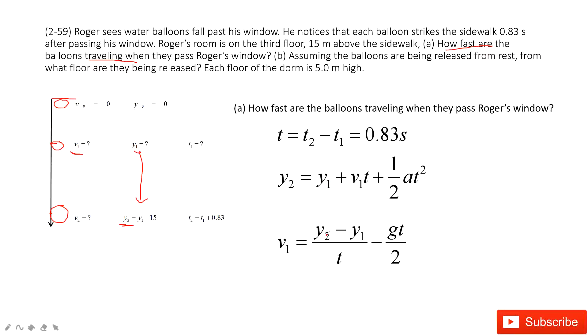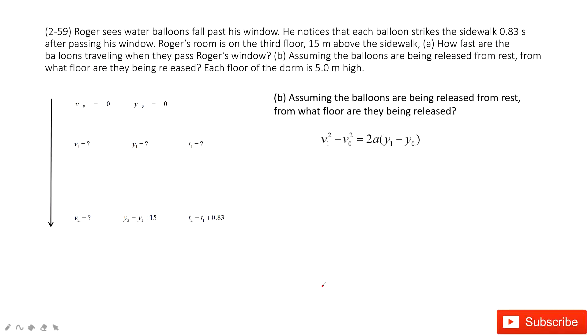So we can solve the problem. Y2 minus Y1 is 15 meters. When we solve for V1, it is: V1 = (Y2 - Y1)/t - gt/2. So 15 meters divided by 0.83 minus 9.8 times 0.83 divided by 2. We get V1 is 14 meters per second.